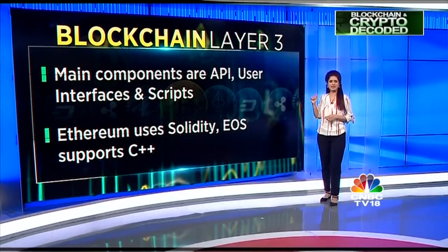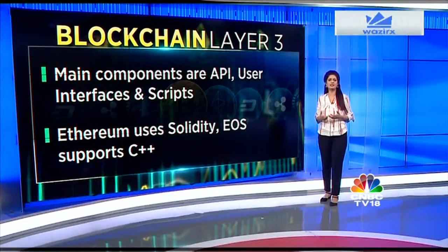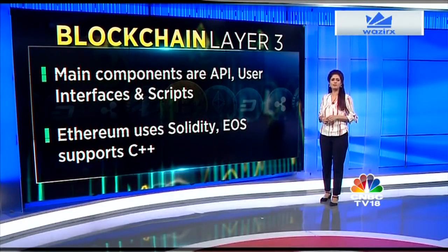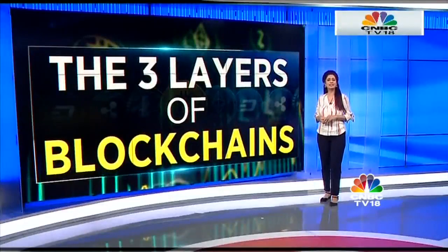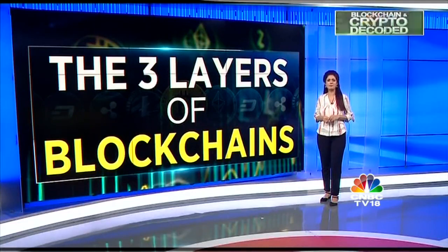Different blockchains support different programming languages when creating smart contracts. For instance, Ethereum uses Solidity, EOS uses C++, and JavaScript and Golang are used for others. Ever since Ethereum's arrival in 2015, layer three platforms have been growing strongly in popularity and value. Ethereum currently has close to 3,000 layer three apps, holding a value of 185 billion dollars.